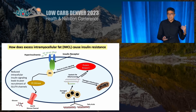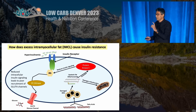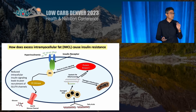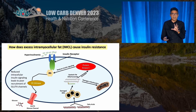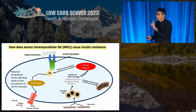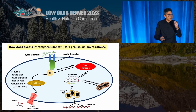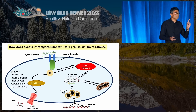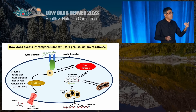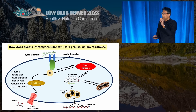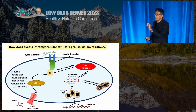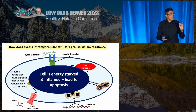Now, as low-carbers we tend to think that glucotoxicity — carbs — is the main cause of insulin resistance. Dr. Schulman has clearly shown, and I think this is the accurate picture, that it is lipotoxicity that causes insulin resistance. With lipotoxicity, you convert fat inside the cells to ceramides and diacylglycerol, which prevents intracellular insulin signaling so you cannot recruit the GLUT4 channels to take in glucose. In addition, toxic fat damages your mitochondria — the mitochondria don't burn cleanly, they make a lot of free radicals, the cell gets energy-starved, inflamed, and dies.